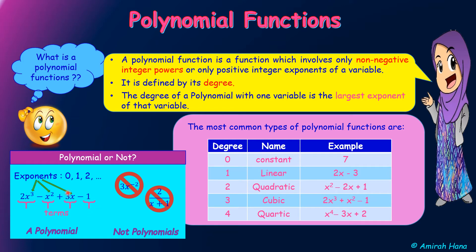Now let me check whether these are polynomials or not. Let's say we have 2x³ minus x² plus 3x minus 1. This is a polynomial because we have non-negative integer powers, or only positive integer exponents. But this is not a polynomial because it has negative integer powers.